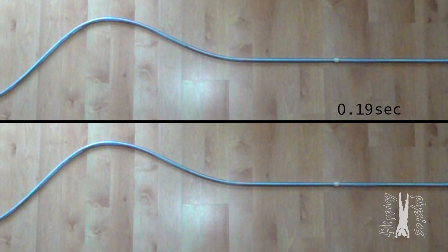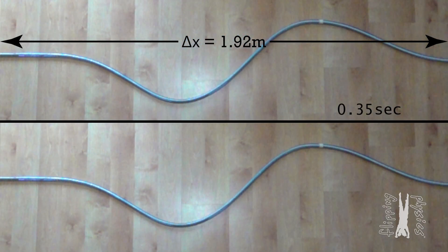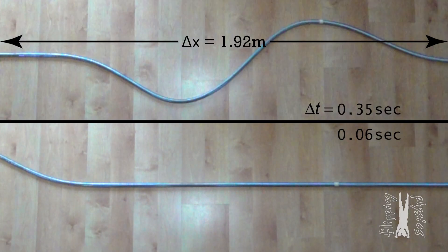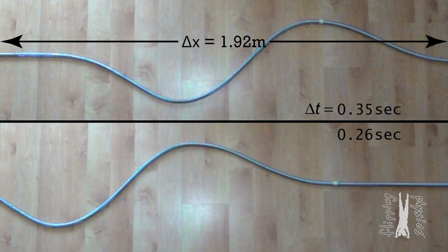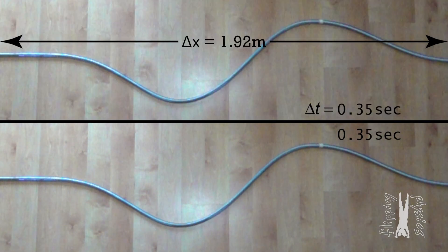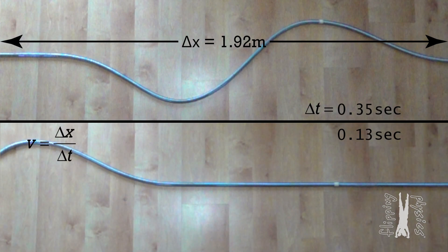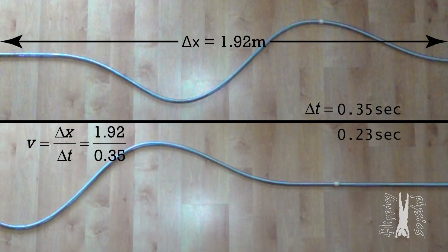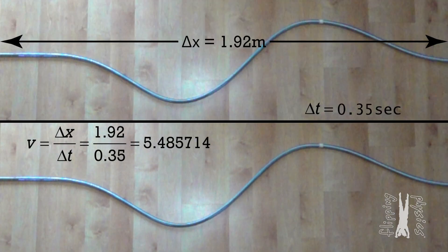But what if we instead measure the distance traveled by the wave all the way across the screen and the time it takes for that to happen? The full width of the screen is 1.92 meters, and you can see the time it takes for the wave to go all the way across the screen is 0.35 seconds. Bobby, what is the speed of the wave using that information? We can use the equation for the magnitude of velocity: change in position divided by change in time, or 1.92 divided by 0.35, which is 5.5 meters per second with two significant digits.